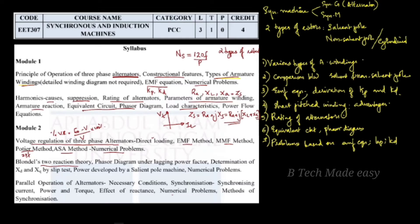In a salient pole machine, the air gap is non-uniform. The reluctance varies with the position of the rotor. The minimum value corresponds to the direct axis and the maximum value corresponds to the quadrature axis. The direct axis is along the pole axis, while the quadrature axis is mid-between the poles.